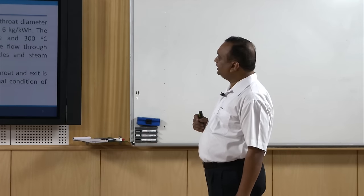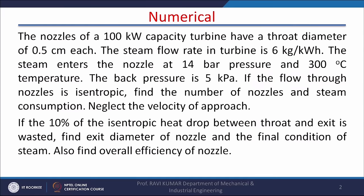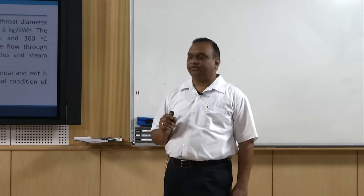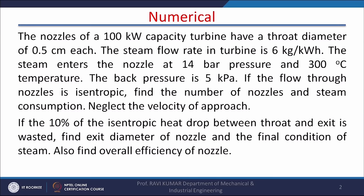The back pressure is 5 kilo Pascal — that is the pressure after expansion in the nozzle. If the flow through the nozzle is isentropic, find the number of nozzles and steam consumption, neglecting the velocity of approach. Also, if 10 percent of the isentropic heat drop between throat and exit is wasted, find the exit diameter of the nozzle, the final condition of steam, and the overall efficiency of the nozzle.